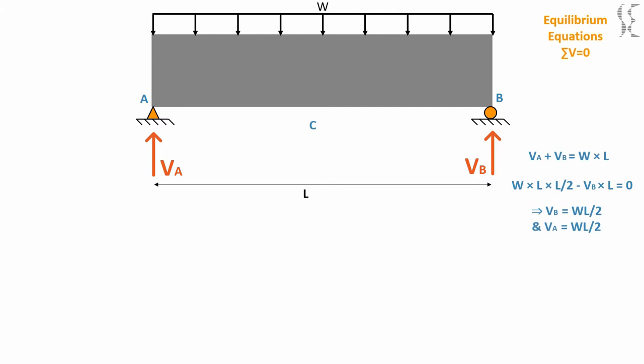If we want force at center of the beam C by assuming half of the beam, we get zero reaction at point C as VA will cancel out WL by 2. By this information we can draw a shear force diagram with VA and VB at extremes and zero force at center.